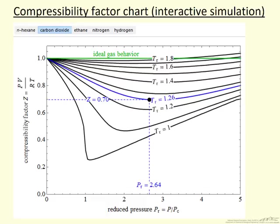This screencast demonstrates how to use the interactive simulation for a compressibility factor chart. What this chart is is a plotted compressibility factor, pressure times volume divided by the ideal gas constant times absolute temperature.